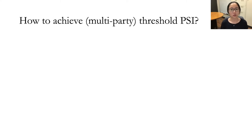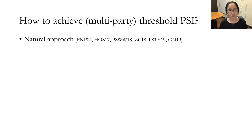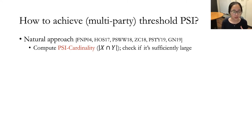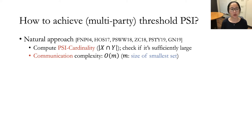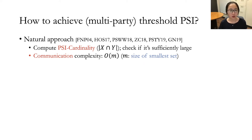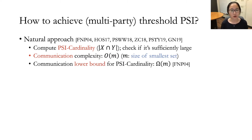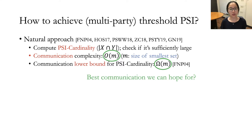Now the next question is how to achieve threshold PSI. A natural approach is to first compute PSI cardinality, which is the size of the intersection, and then check if it is sufficiently large. The best communication complexity we can achieve using this approach is of order m, where m is the size of the smallest set. On the other hand, there is a communication lower bound for PSI cardinality that's also of order m. So by looking at this upper bound and lower bound, it seems like this is the best communication complexity we can hope for. But is it true?